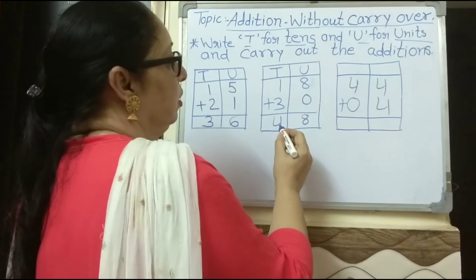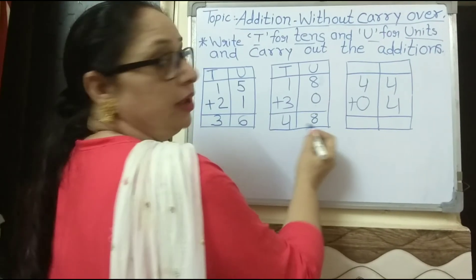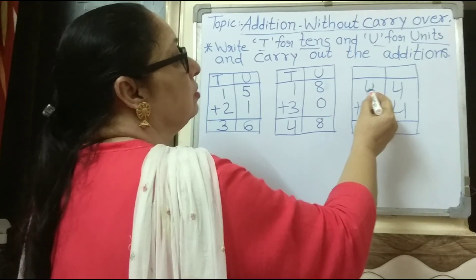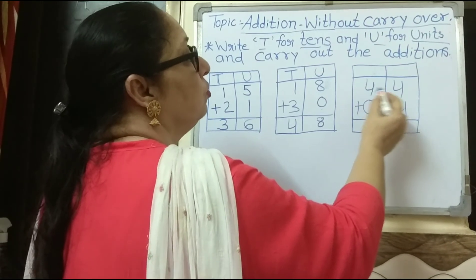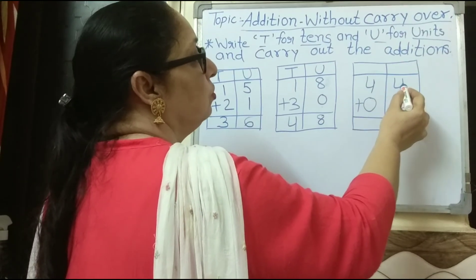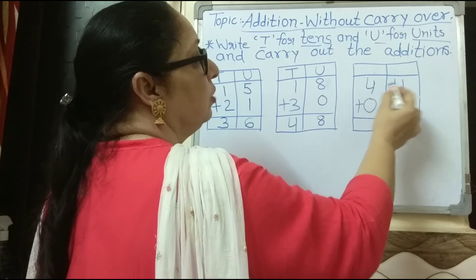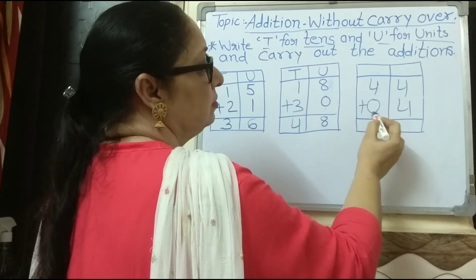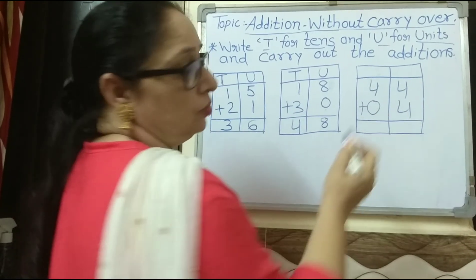Next: forty-four plus zero. Four plus zero in the units is four, and four tens plus zero tens is four tens, giving forty-four.